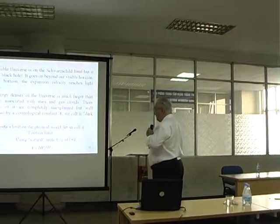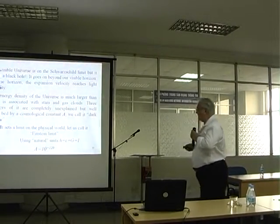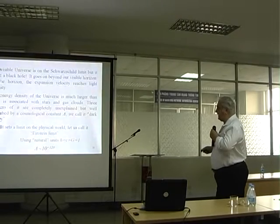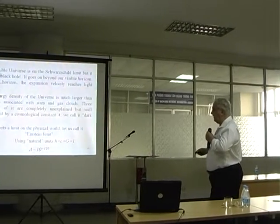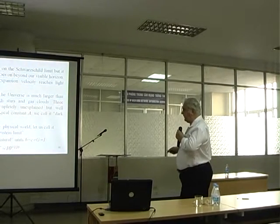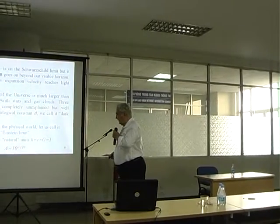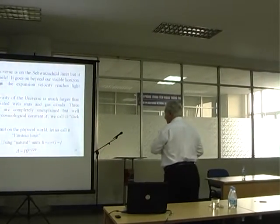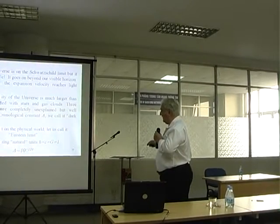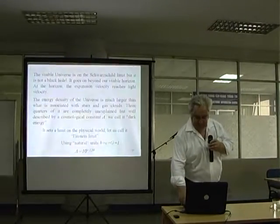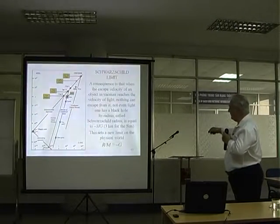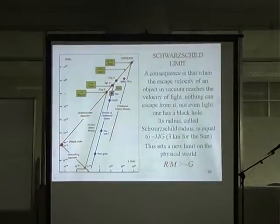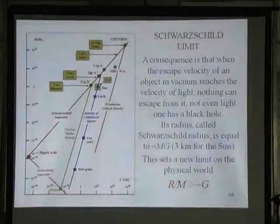The energy density of the universe is much larger than what is associated with stars and gas clouds — in fact, ordinary matter is only four percent. Three quarters of it are described by a cosmological constant, which we call dark energy. This sets a limit of the physical world — the Schwarzschild limit on which we find black holes — corresponding to the density of the universe, completely defined by the cosmological constant.